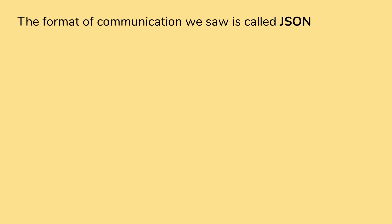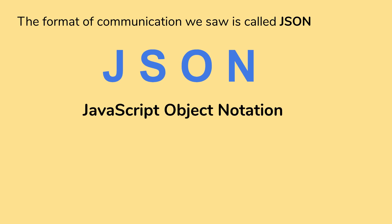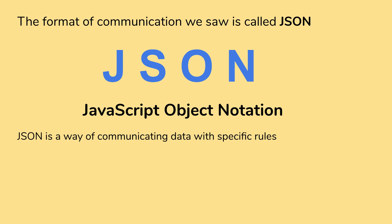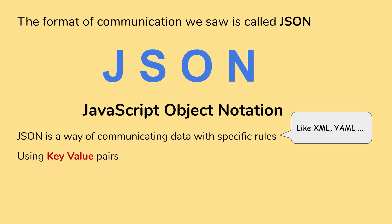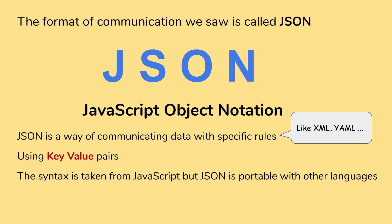This is a hypothetical example, but the format of communication we just saw is called JSON. JSON stands for JavaScript Object Notation and it is a way of communicating data with specific rules or a specific syntax and structure. Like XML and YAML, JSON is another way of communicating data. It uses key-value pairs and the syntax is taken from JavaScript. But JSON is portable with multiple languages, so you can use JSON with almost all languages.